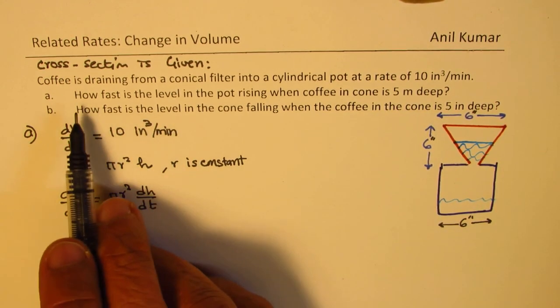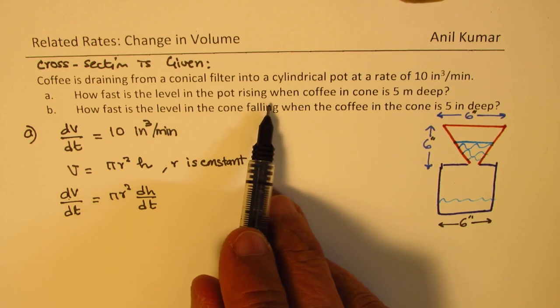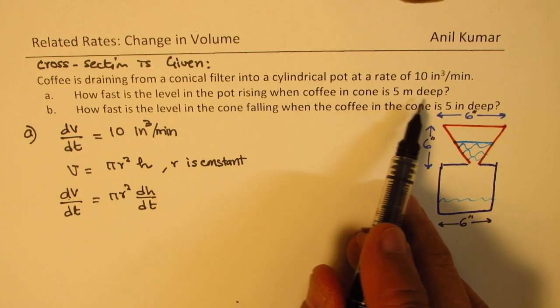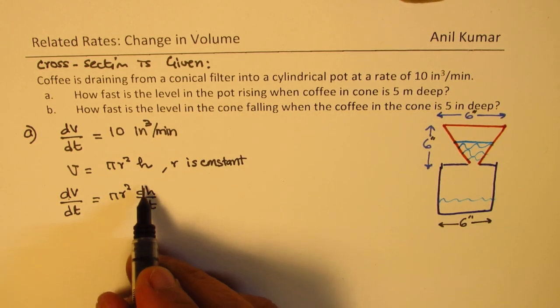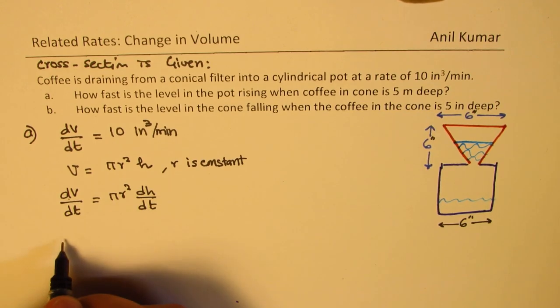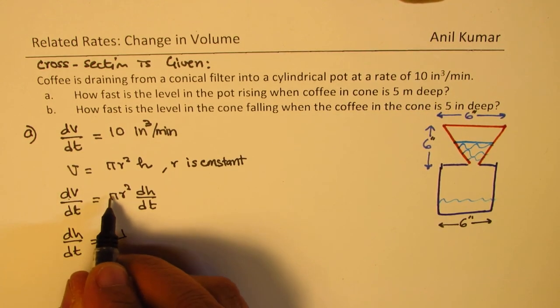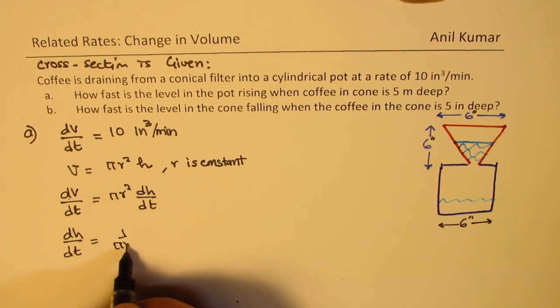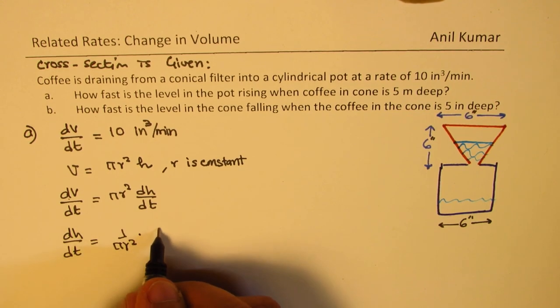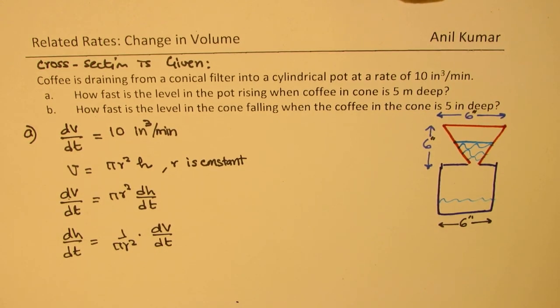So we need to find how fast the level in the pot is rising when the coffee in the cone is 5 inches deep. We have dh/dt equals dV/dt divided by πr².